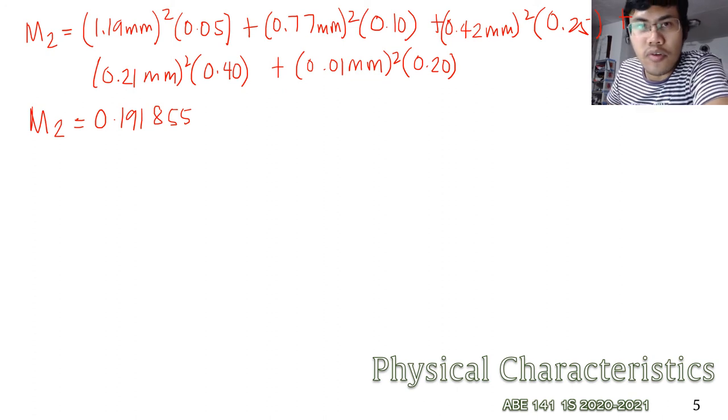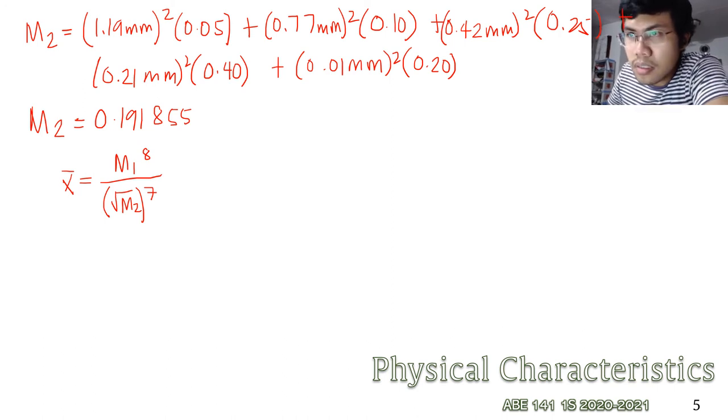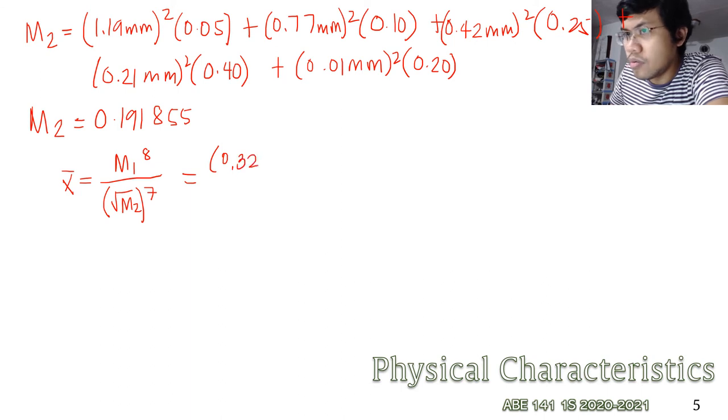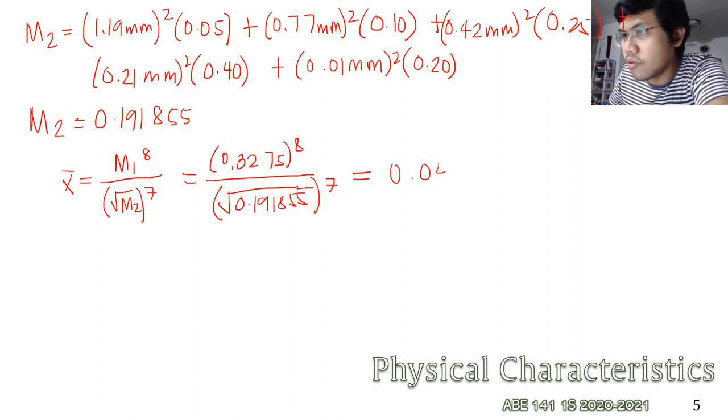So we can now compute for x bar or the mean, which is M1 raised to 8 over the quantity square root of M2 raised to 7. We get 0.3275 raised to 8 over the square root of 0.191855 raised to 7. We have here 0.0427 millimeters.